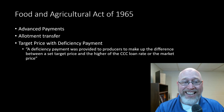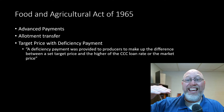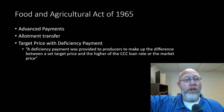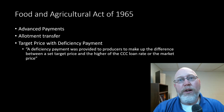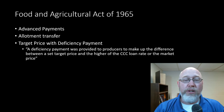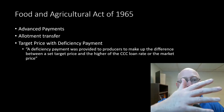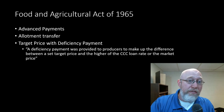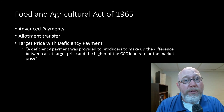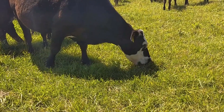Also in 1965, the idea of a target price with deficiency payment pops up again. A quote from the book: 'A deficiency payment was provided to producers to make up the difference between a set target price and the higher of the CCC loan rate or the market price.' It's important to remember that the CCC non-recourse marketing loan was happening simultaneously with the target price with deficiency payment — these policies were going on at the exact same time, which is why they get really confusing. We'll talk about the 1970s in the next video.